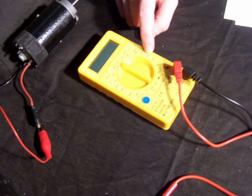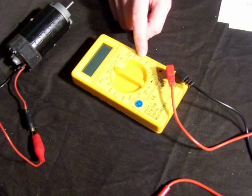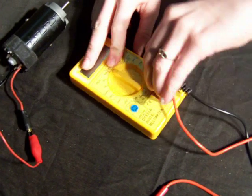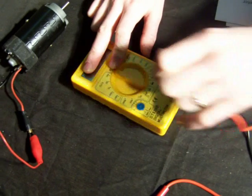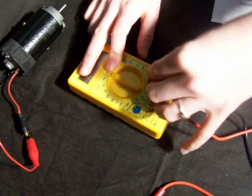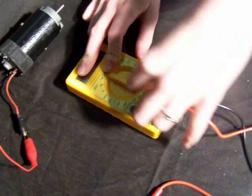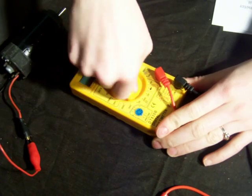Since I am not exactly sure of the amp usage of this motor, I am going to move the positive probe to this connection which is capable of reading up to 10 amps. I then set the meter to the 10 amp setting.